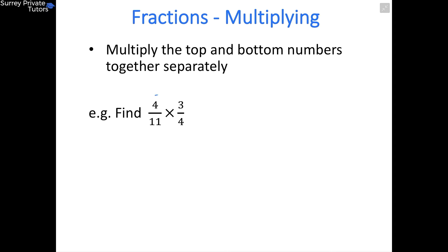For this example, all you need to do is multiply the top together and then multiply the bottom together. The top's going to be 4 times 3, which will give us 12 for our numerator, and then the bottom will be 11 times 4, which is going to be 44.